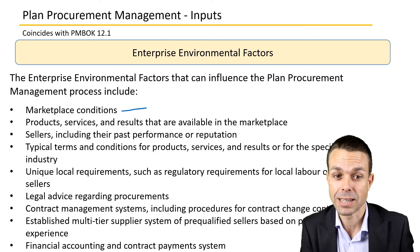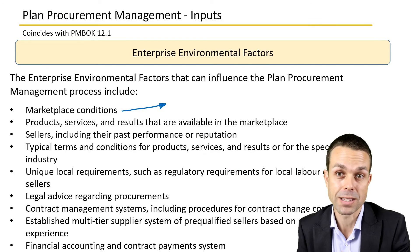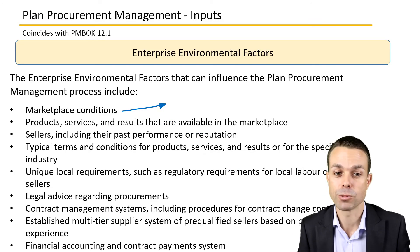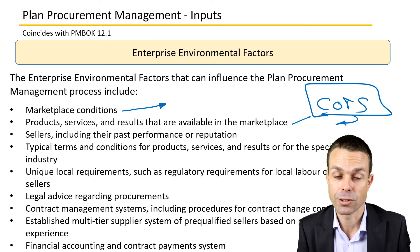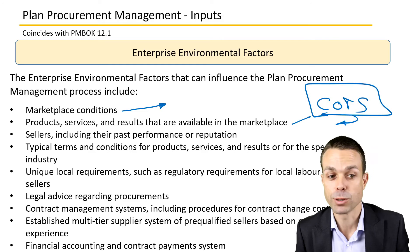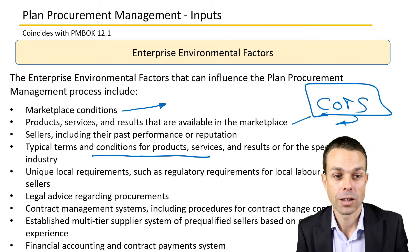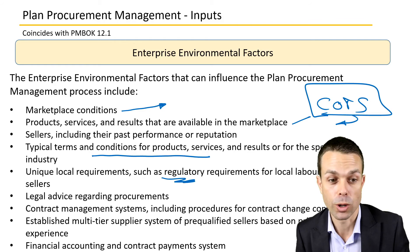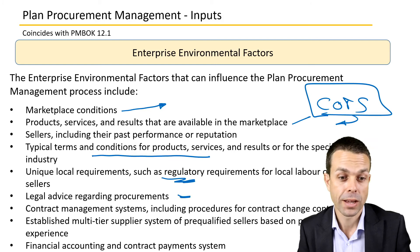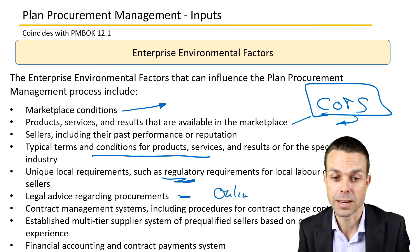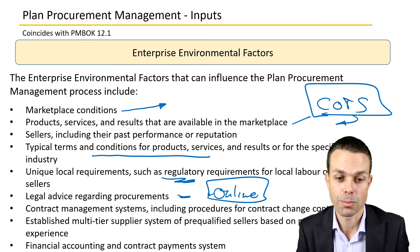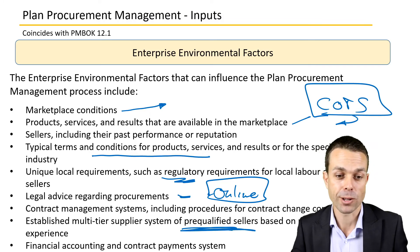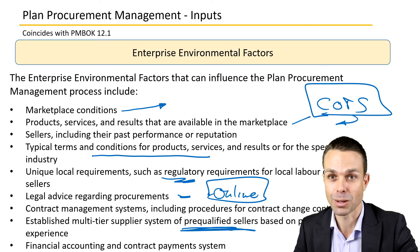Enterprise environmental factors as an input could include marketplace conditions — the current marketplace might make it better to buy something than to make it. Products, services, and results available in the marketplace, such as commercial off-the-shelf items, may fit neatly into our project. Seller information including past performance and reputation, typical terms and conditions for that industry, unique local requirements such as regulatory requirements, legal advice regarding procurements, contract management systems for managing and signing contracts online, established multi-tier supplier systems of pre-qualified sellers, and financial accounting and contract payment systems are also relevant.